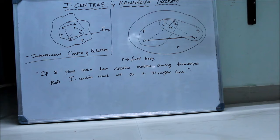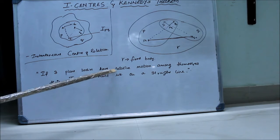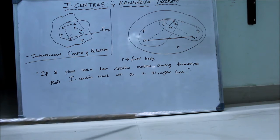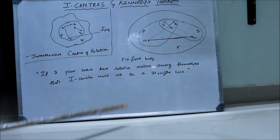Now, coming to Kennedy's theorem — it states that if three plane bodies have relative motion among themselves, their I-centers must lie on a straight line.